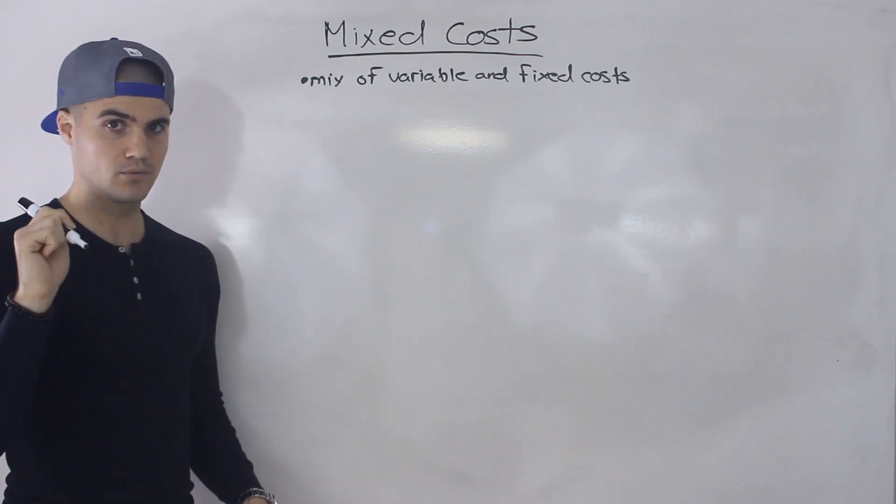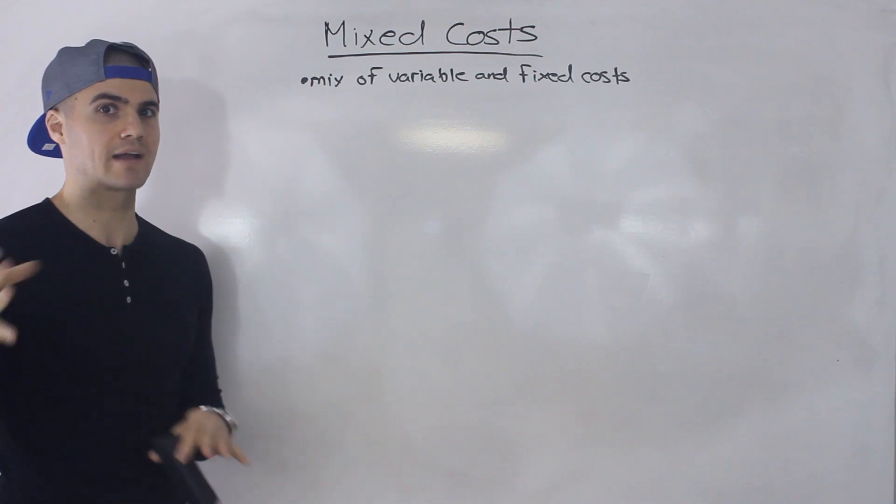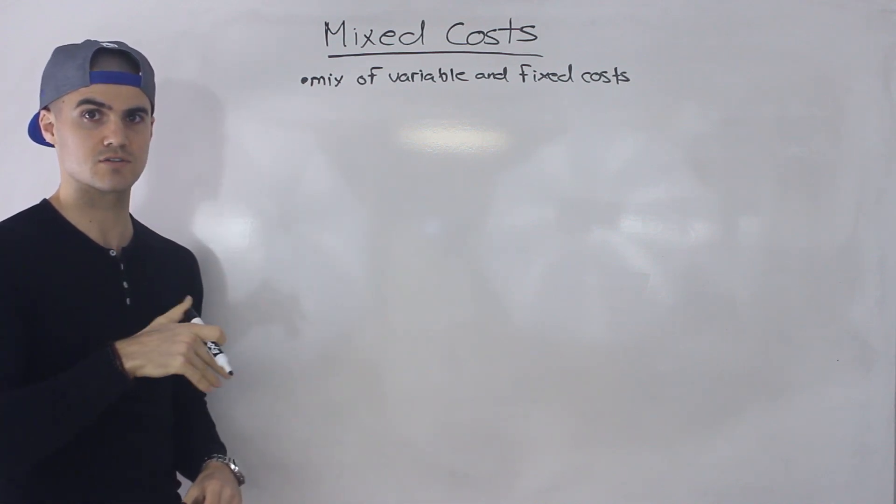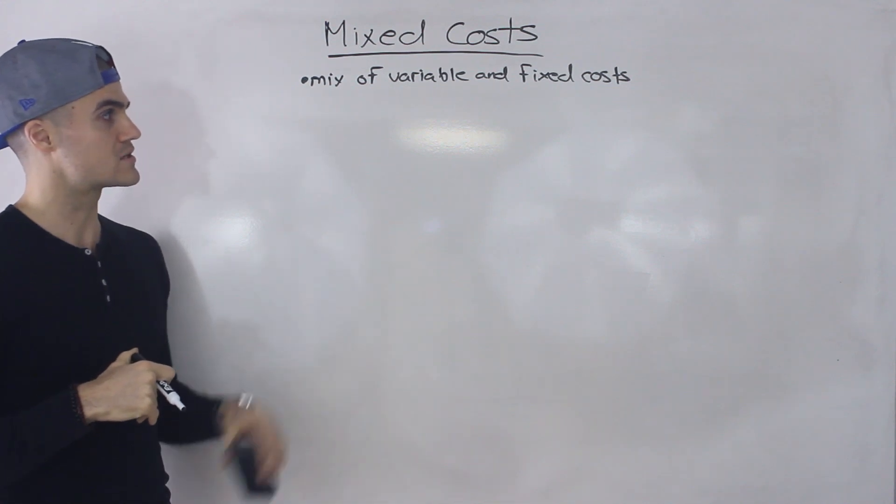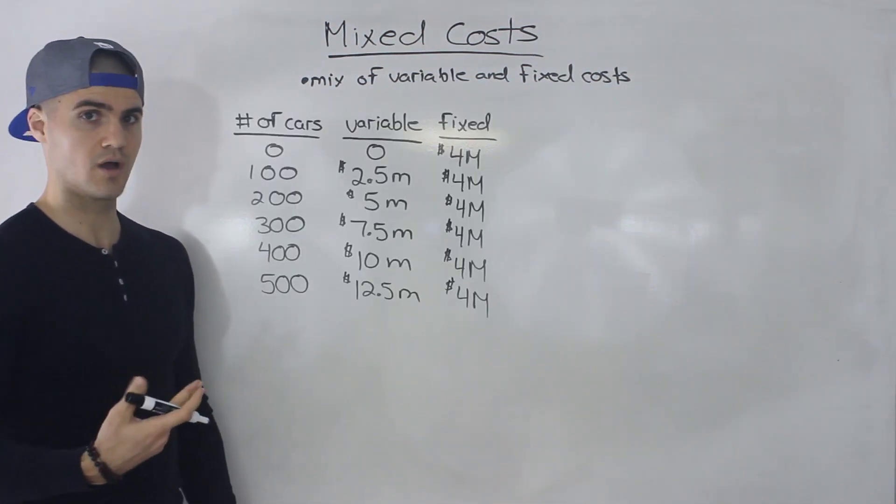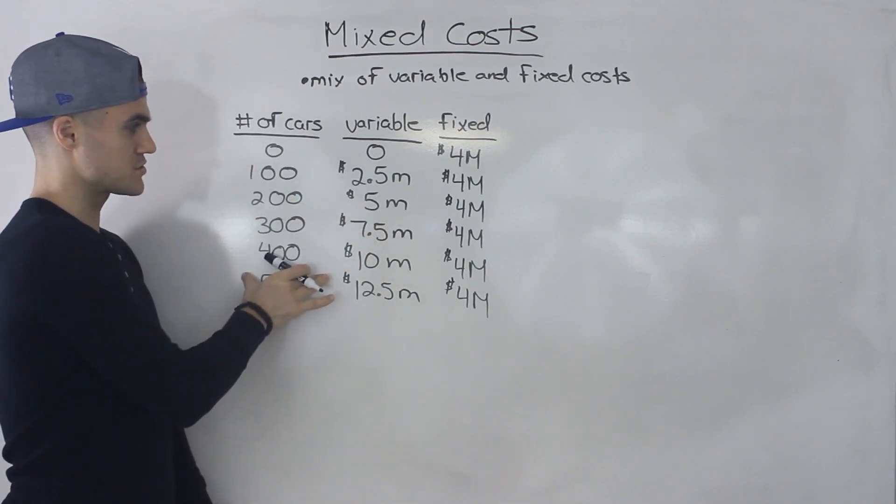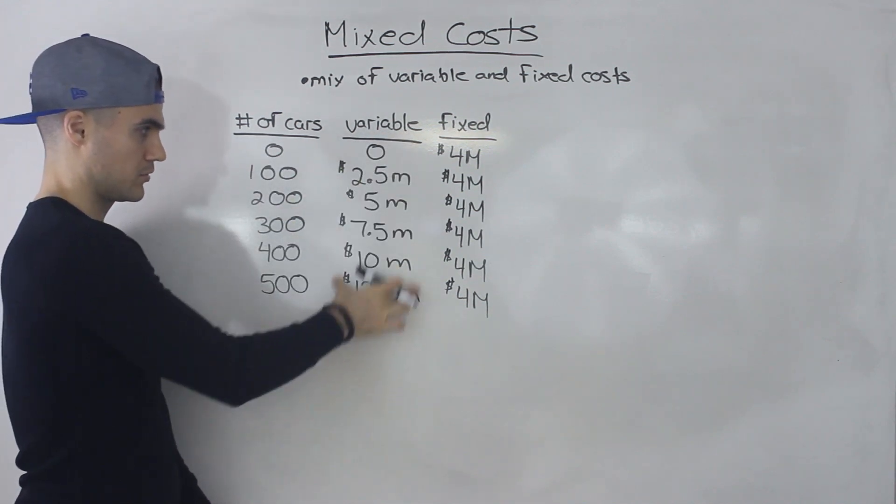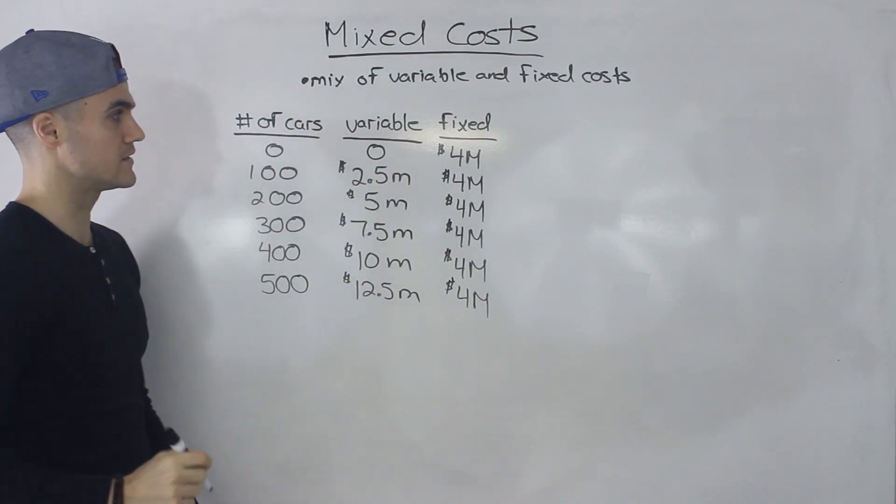Now in the video on fixed and variable costs, I went over an example with the car factory. I'm actually going to be bringing back that example here into this video. So make sure you watch that video as well before watching this one. And as a review of that example, I wrote out the chart over here. So we had the number of cars produced and then we went over the variable costs and the fixed costs. So I sort of summarized it all in this chart.